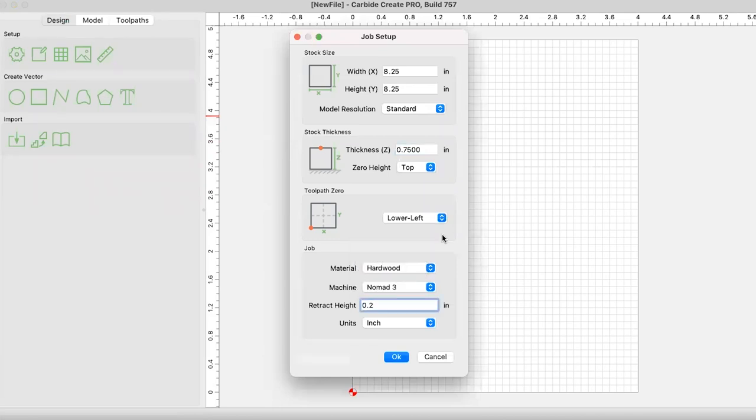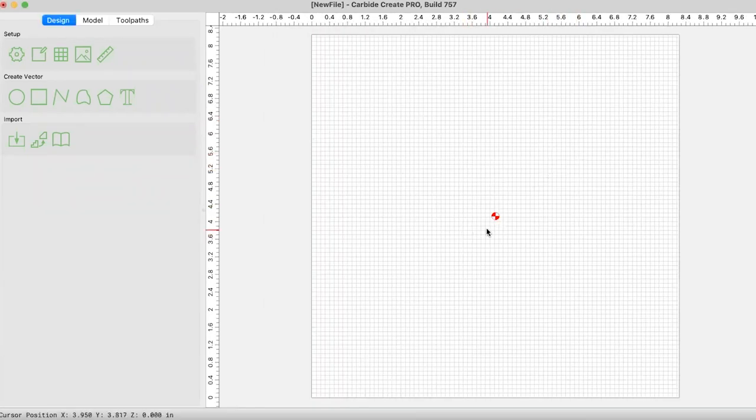Stock thickness doesn't really matter, but since we're running MDF, I'll just leave it on 0.75 and change my retract height down a little bit to 0.2. So you see, I have the machine set up as a Nomad. Now, one really important thing that we need to change is this toolpath zero. Instead of lower left, we're going to set it as center.